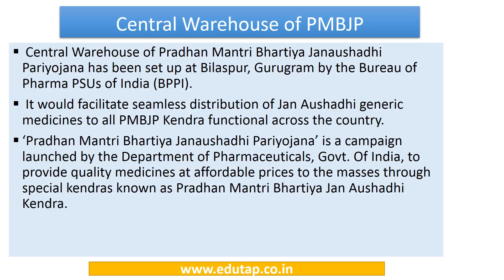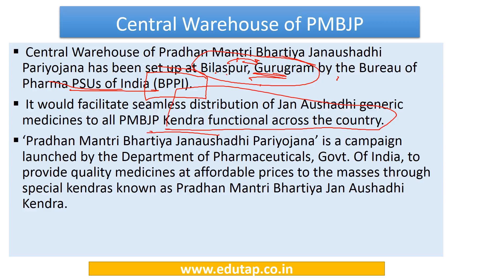The second news pertains to the central warehouse of Pradhan Mantri Bharatiya Jan Aushadi Pariyojana. This has been set up at Bilaspur in Gurugram — note there are multiple Bilaspurs in India: one in Gurugram, one in Himachal Pradesh, and one in Chhattisgarh. This warehouse has been set up by the Bureau of Pharma PSUs of India, that is BPPI, to facilitate distribution of Jan Aushadi medicines to all the Pradhan Mantri Jan Aushadi Kendra functional centers across the country.